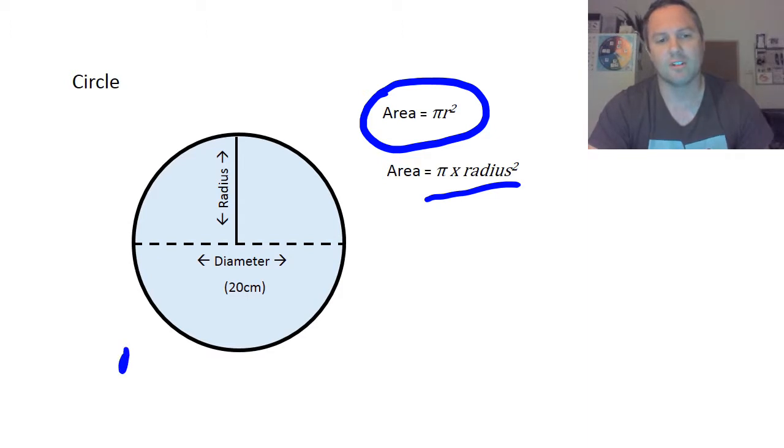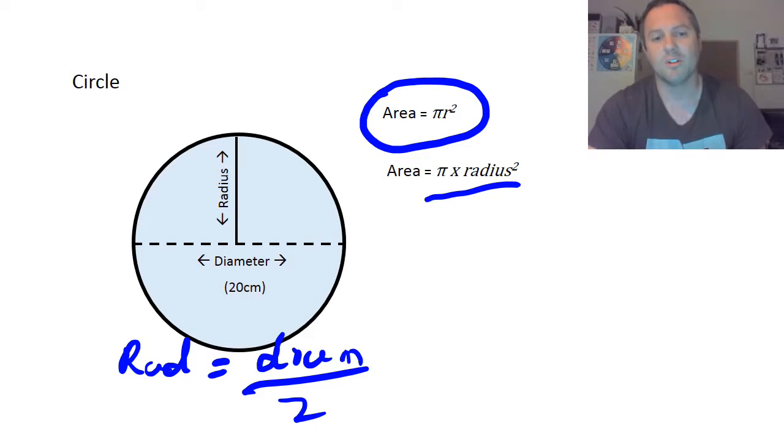So radius, and I'll put it down here for you so you can remember, radius equals diameter divided by 2. So it's the same thing but just divided by 2. So 20 divided by 2 gives you your radius. In this case, 10.